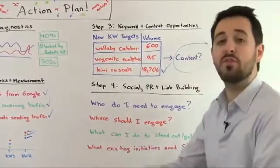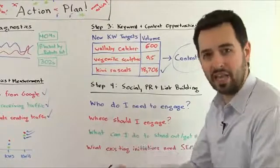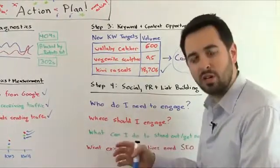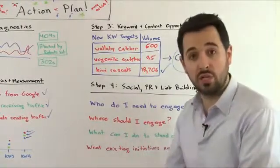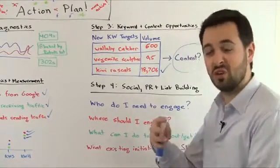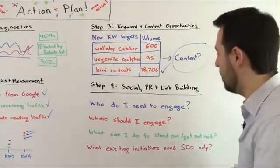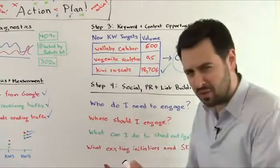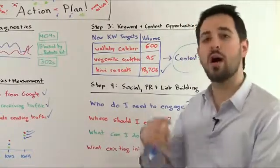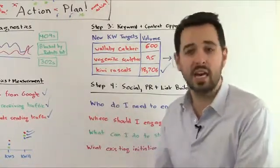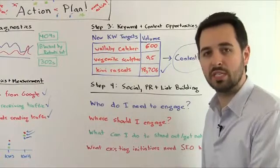Step four is social media, public relations, link building, and outreach — engagement that brings branding value, awareness, and direct links back to your site. You might be looking on Twitter, in the blogosphere, in press and media, or within your industry at trade organizations and business listing directories. The question is: who do you need to engage at those places and how do you connect with them? There's new forums gaining popularity, new blogs taking off, new Q&A sites going wild in your sphere — you want to be in at the ground floor and participate in those places.